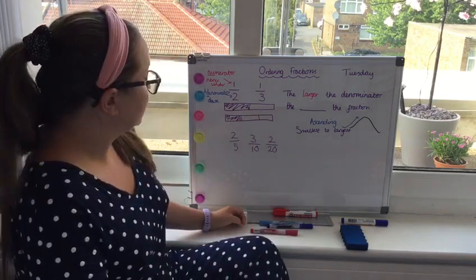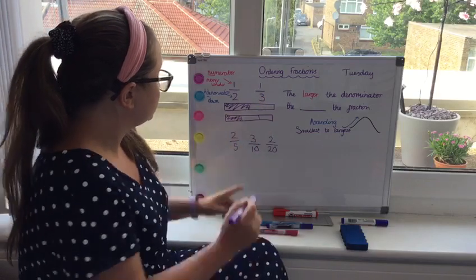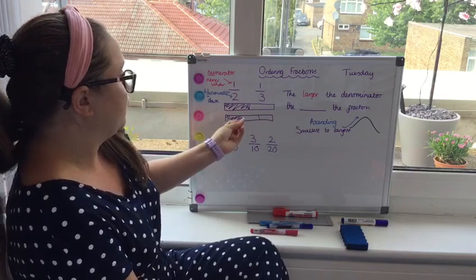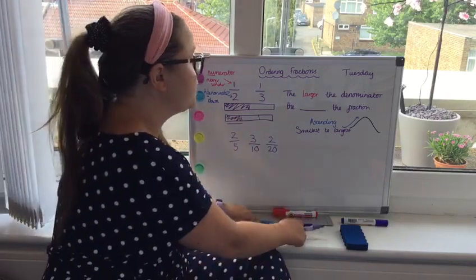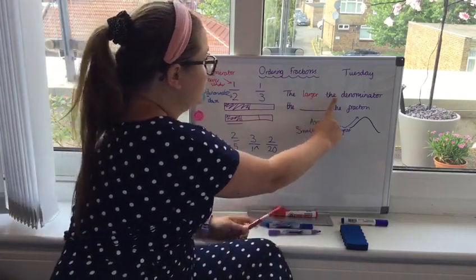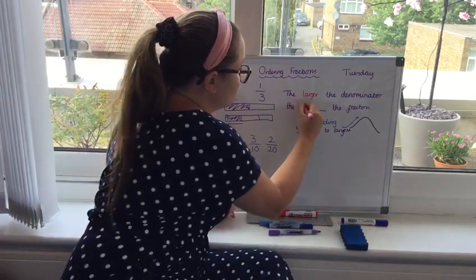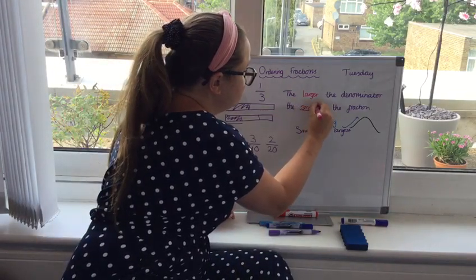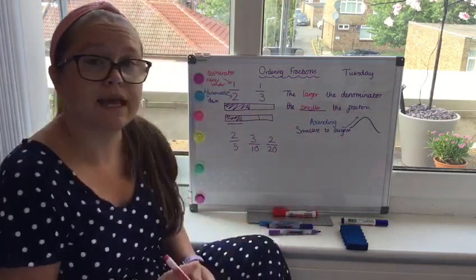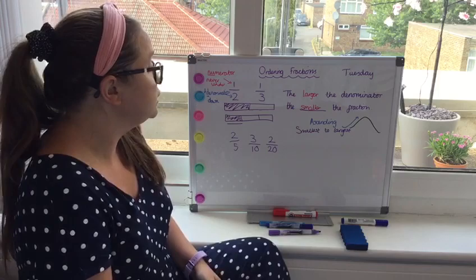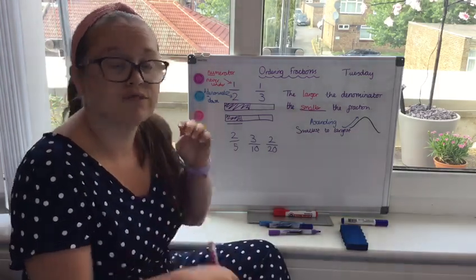So you can see that actually a third is smaller. So the bigger the number, the smaller the fraction. So therefore, the larger the denominator, the smaller the fraction. You could say that the other way around, you could say the smaller the denominator, the larger the size of the fraction.